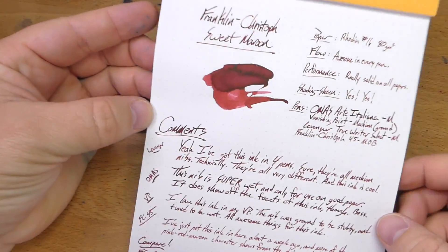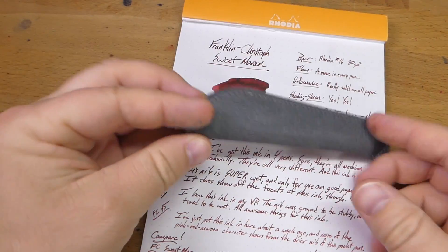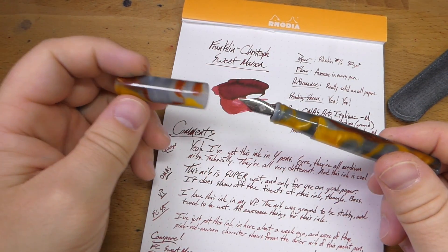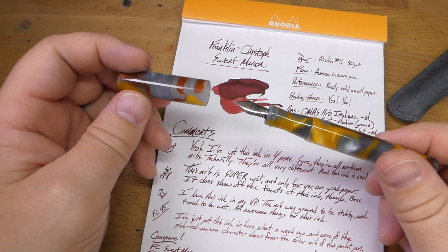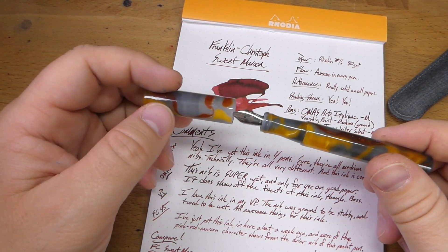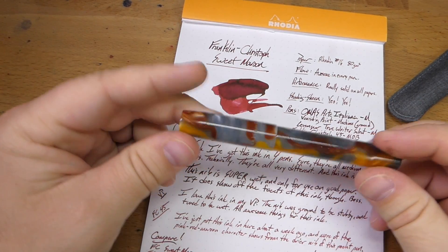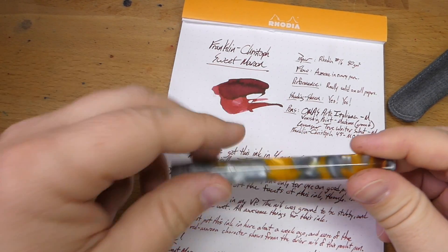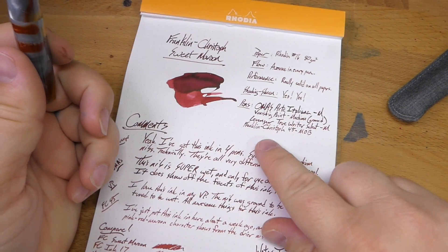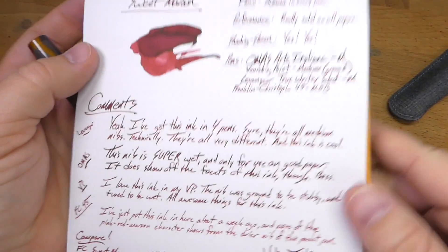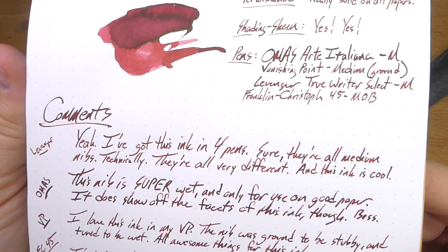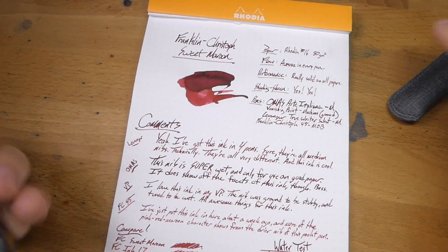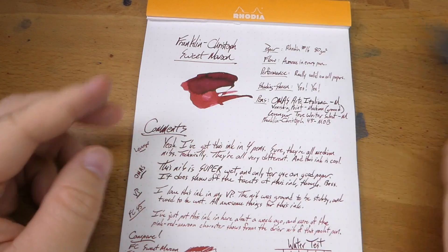Let's talk about the pens I had this in. This is a Franklin Christoff 45. This is the one that's been in the least time. This is a little oblique medium that I had ground for me. I like an oblique pen. This is the driest of these nibs. You can see you definitely get more of the lighter tones and that sort of thing out of it.